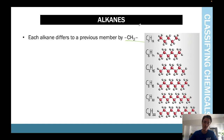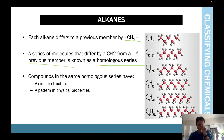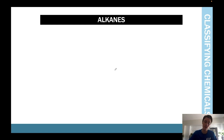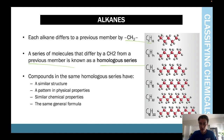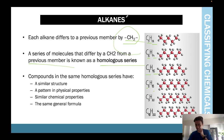Each alkane differs from the previous member by CH2. A series of molecules that differ by CH2 from a previous member is known as a homologous series. Compounds in the same homologous series have similar structure, similar physical properties, similar chemical properties, and the same general formula. For example, with five carbons you have 12 hydrogens, and they increase by CH2 each time.